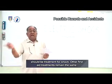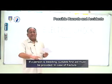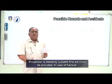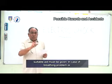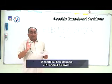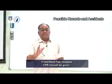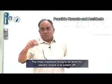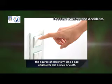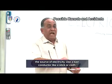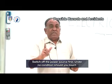Other first aid treatments remain the same — if a person is bleeding, suitable first aid must be provided; in case of fracture, suitable aid must be given; if there is a breathing problem or the heartbeat has stopped, CPR should be given. The most important thing to do for electric shock is to switch off the source of electricity. Use a bad conductor like a stick or cloth, and switch off the power source first.